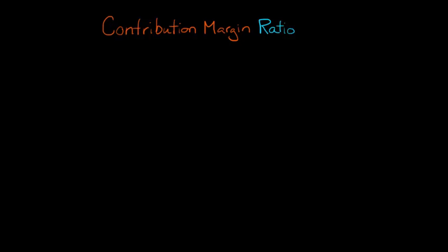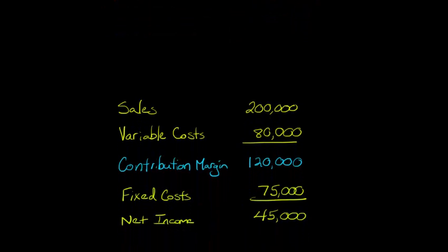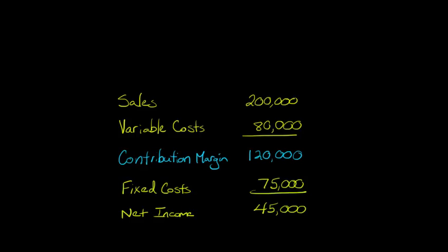Now that we've discussed what contribution margin is, we're going to talk about a very important ratio. So let's say that our bicycle manufacturing firm has a contribution income statement that looks something like this.